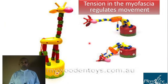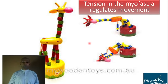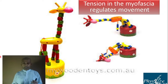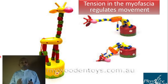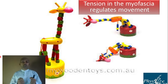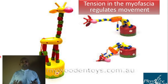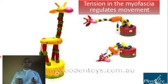Movement is nothing but dynamic posture, so tension in the myofascia also regulates movement. Think of a toy held together by tightened strings — as you change the direction of the string, the toy moves. Our movement happens the same way: once I change the tension in my myofascia, movement happens. Tension in the myofascia regulates both posture and movement.